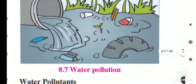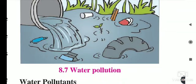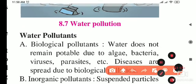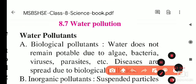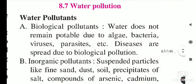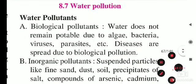Looking at this picture, we can see that this water is polluted because of its color and the many unwanted things mixed into it. The first type of pollutants are biological pollutants. Due to biological pollutants, water does not remain potable — meaning drinkable.